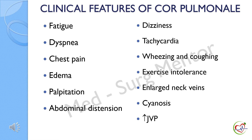Common clinical features of cor pulmonale are fatigue, dyspnea, chest pain, edema, palpitations, abdominal distension, dizziness, tachycardia, wheezing and coughing, exercise intolerance, enlarged neck veins, cyanosis, and increased jugular venous pressure.